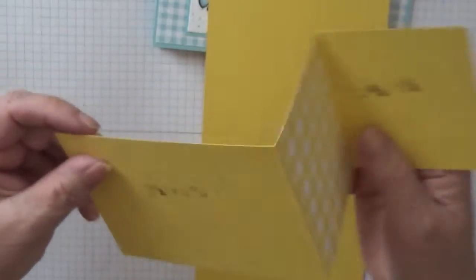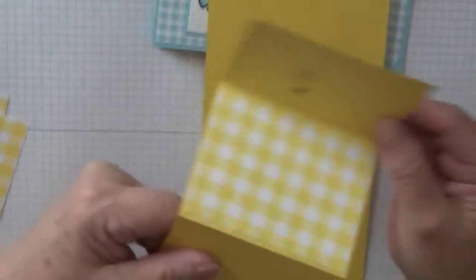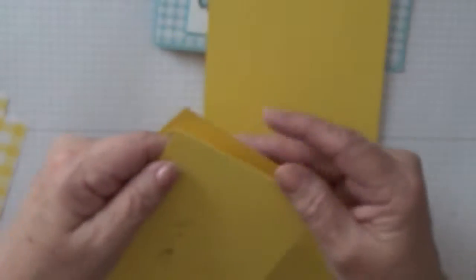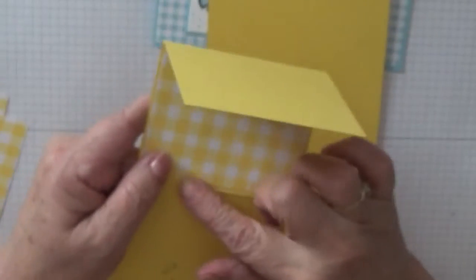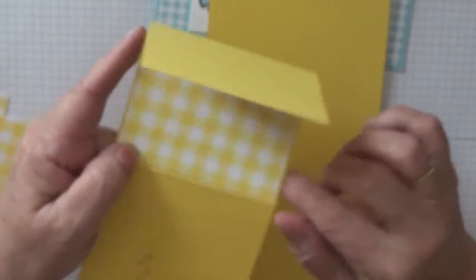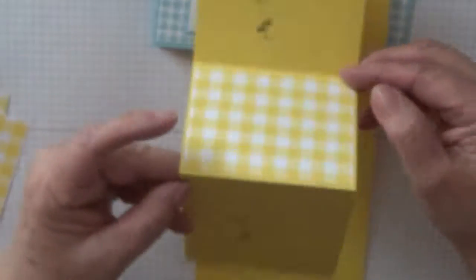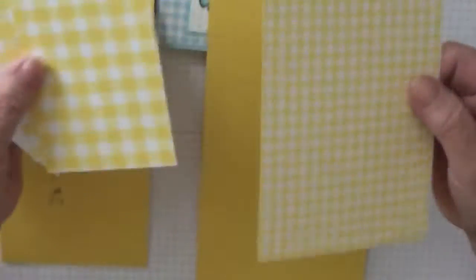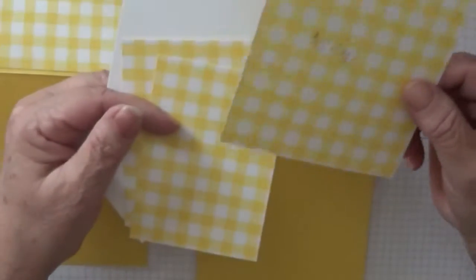But I scored this at four and three-quarters and seven and a half. The DSP you'll need, I'm using the yellow daffodil delight gingham paper.